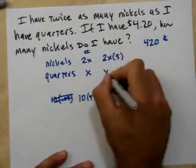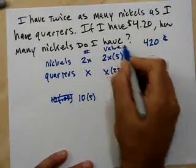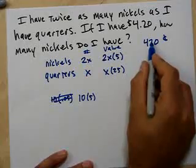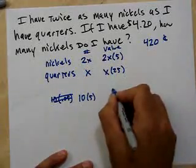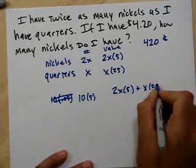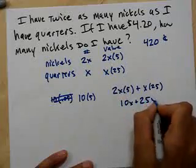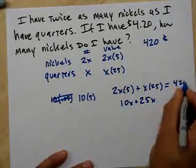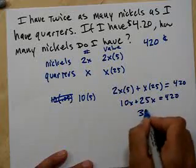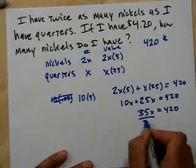And the number of quarters times 25. This would be my value of them. And their value together is 420 cents, right? So, let's write the equation out. 2x times 5 plus x times 25, which would be 10x plus 25x. So, equals 420, equals 420. So, 10x and 25x is 35x. That's 420. And finally, divide by 35.